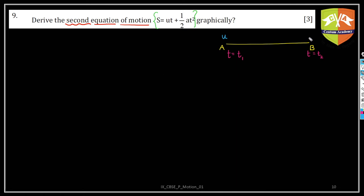At point A the initial velocity is u, and the velocity at B is v. We are assuming a case of uniform acceleration, with acceleration acting in the direction of motion. The particle was at A at t = t1 and at B at t = t2 in straight-line motion.